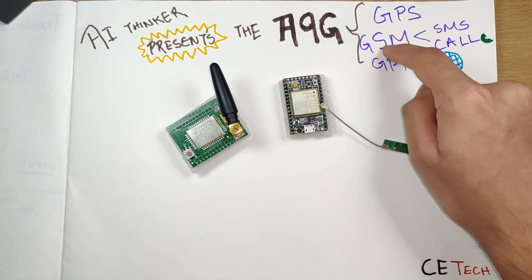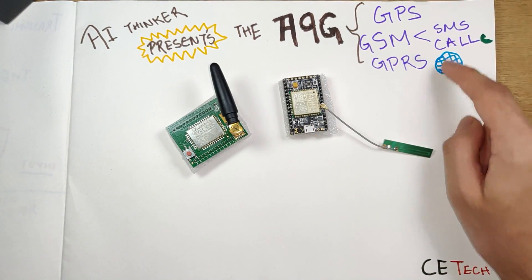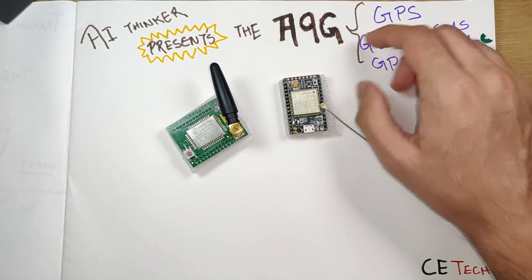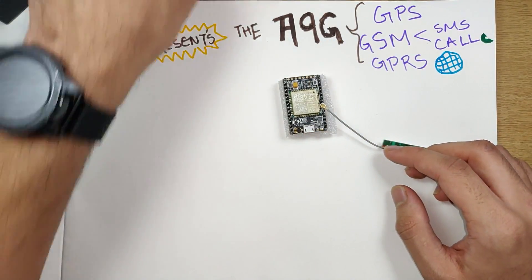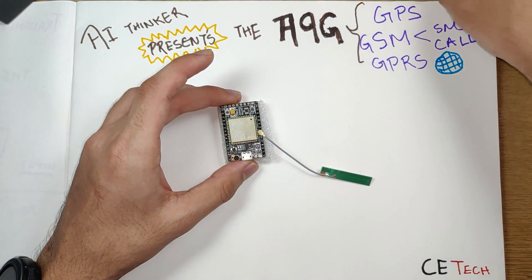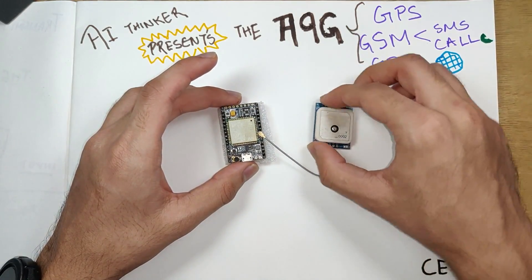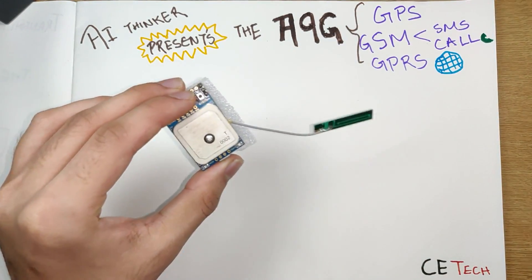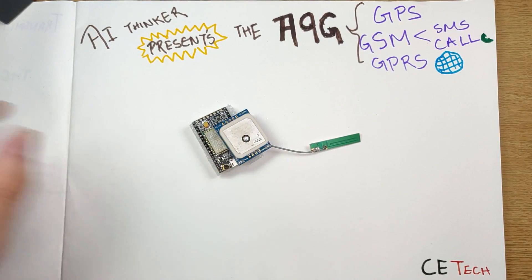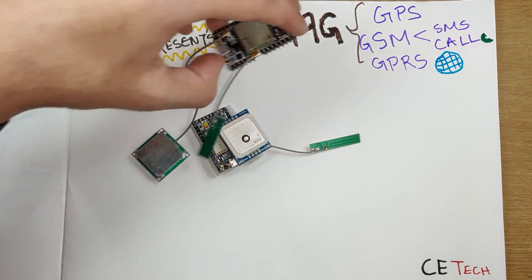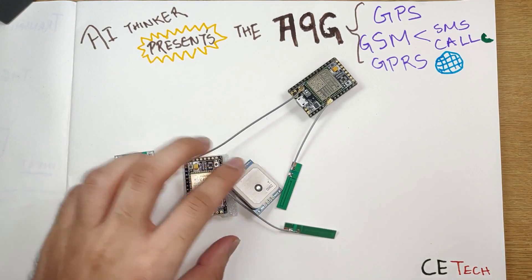Both the A6 and A9 modules have GPRS and GSM functions, but they lack GPS functionality. Let's keep the A6 aside for a moment. Consider that you add a GPS module like this one. For this module to function as one, the answer to this problem is the A9G.